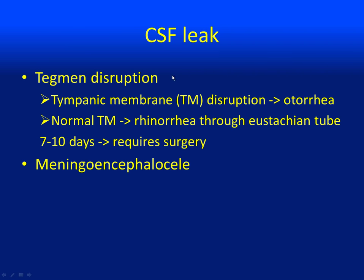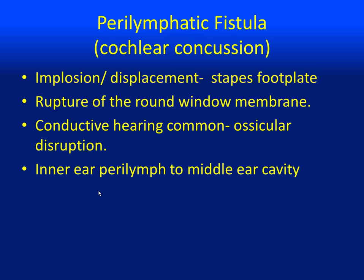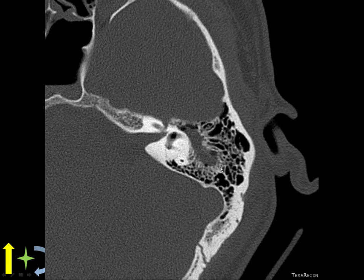We've talked a little about CSF leak. If the tegmen is disrupted and the tympanic membrane is also disrupted, the patient will have otorrhea. But if the tympanic membrane is intact, CSF may drain through the eustachian tube and the patient will have rhinorrhea. If it persists for seven to ten days, they'll often do surgery, and you should be wary for a meningoencephalocele. Perilymphatic fistulas can also occur with trauma, associated with disruption of the round window, presenting with conductive hearing loss, nausea, and vomiting. They don't require fracture — implosions, explosions, and loud noises can cause them. Inner ear perilymph may extend into the middle ear cavity, and on CT you could see air within those inner ear structures.